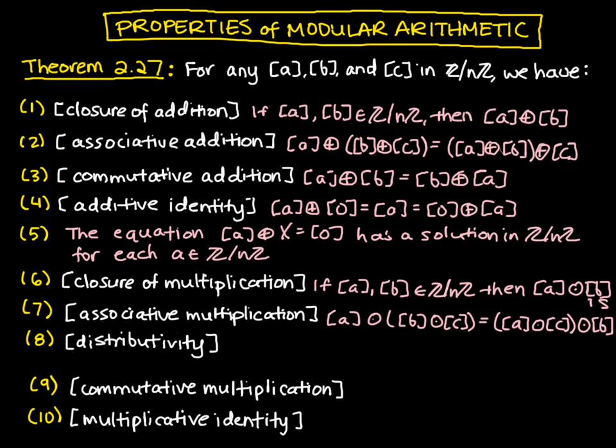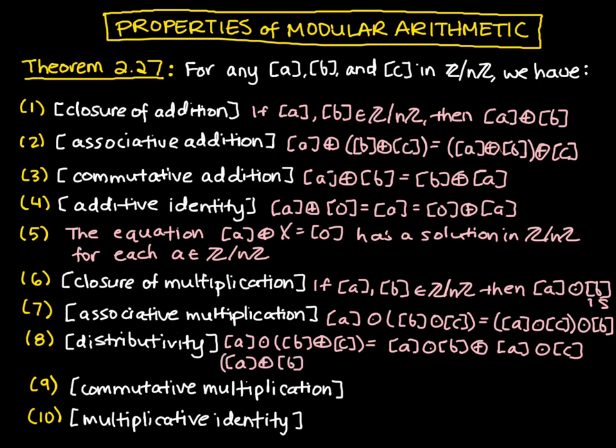We have a distributive property, which tells us that multiplication distributes over addition. So we have a times the sum of b and c, that's equivalent to a times b plus a times c. And then similarly, if we have a plus b times c, that's equivalent to a times c plus b times c.